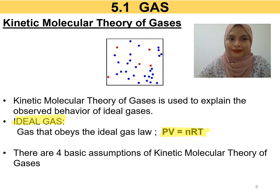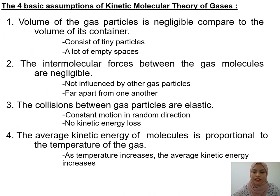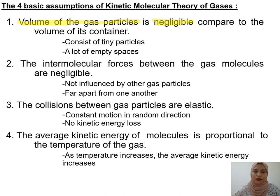There are four basic assumptions of kinetic molecular theory of gases, used to identify ideal gas behavior. The first basic assumption is that in an ideal gas, the volume of the gas particles is almost negligible — we can ignore it — because gas particles are very small. Compared to the container, gas particles are arranged far apart and move randomly, so there are many empty spaces between the gas particles. Therefore, the volume of gas particles in an ideal gas is negligible.